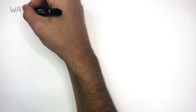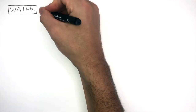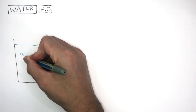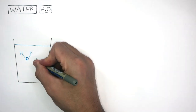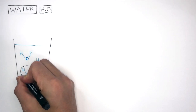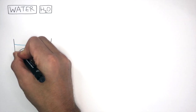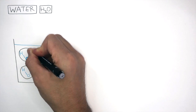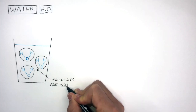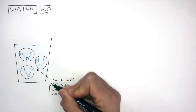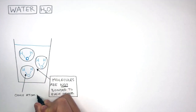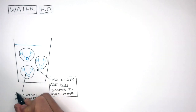We know water has the molecular formula H2O. This is a simplified diagram of a cup containing water, where there are three water molecules being shown. I am drawing circles around each molecule to highlight the simple molecular structure. The molecules are not bonded to each other as they have a simple molecular structure, whereas only the atoms are covalently bonded to each other.